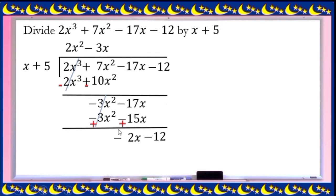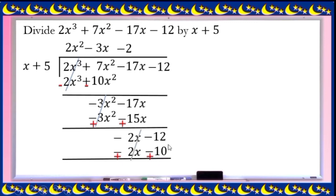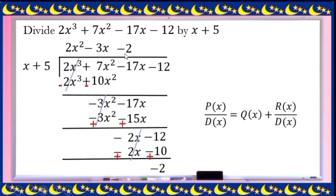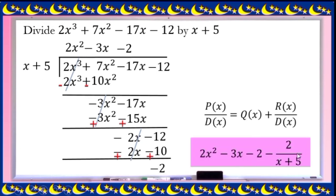Bring down the next term, negative 12. Negative 2x divided by x is negative 2. Negative 2 times x is negative 2x, and negative 2 times 5 is negative 10. Subtract and change the sign, cancel the first term. Negative 12 plus 10 is negative 2. Therefore, negative 2 is our remainder. The final answer is: 2x squared minus 3x minus 2, with remainder negative 2 over divisor x plus 5.